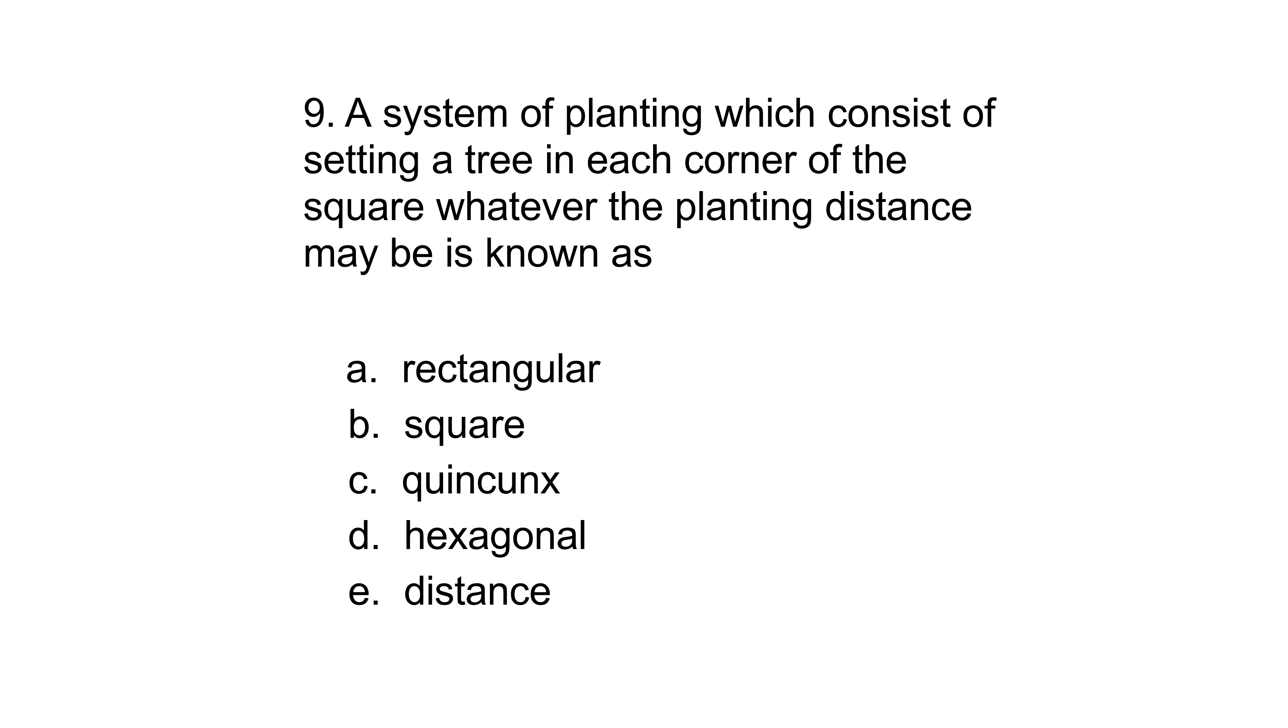Number nine: A system of planting which consists of setting a tree in each corner of the square whatever the planting distance may be is known as rectangular, square, quincunx, hexagonal, or distance. The answer is square.